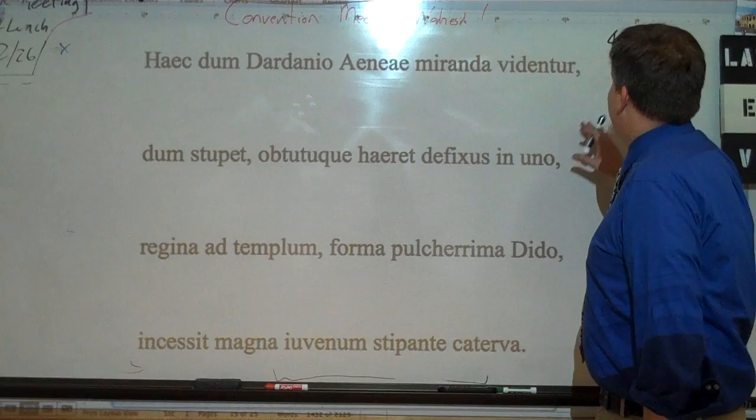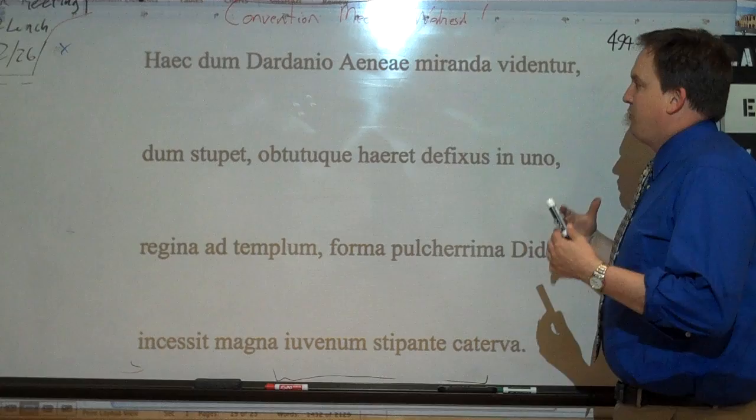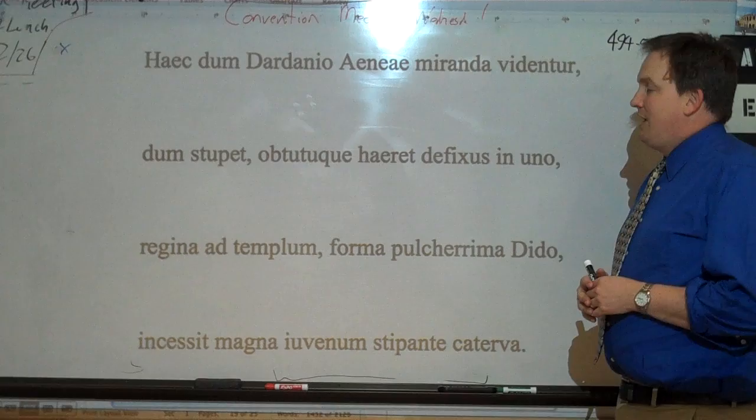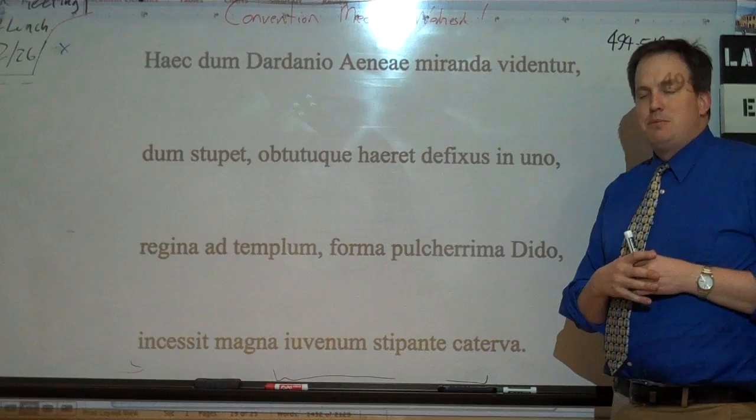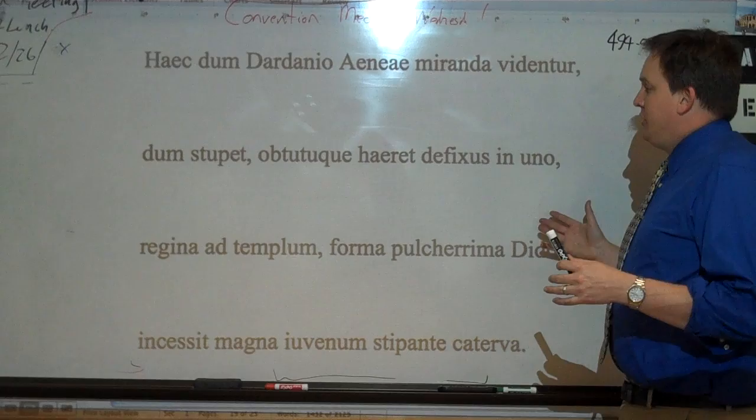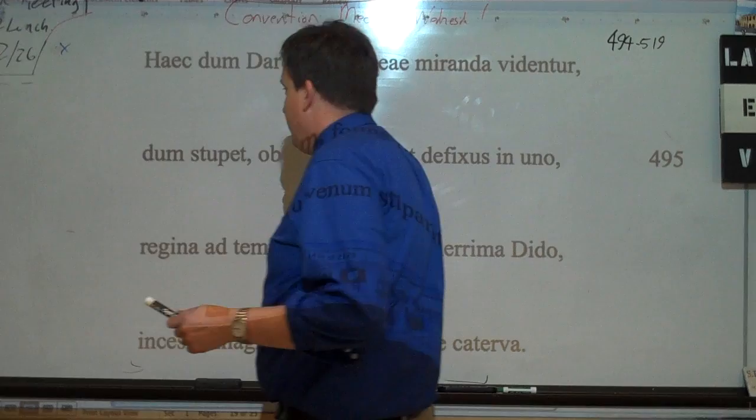So let's take Omnes. Today we're looking at Book 1, line 494 to 519. Alright, so this starts off with Aeneas in the Temple of Juno, in the city of Carthage, with Achates. And they've been looking at the images of the Trojan War upon the Temple, and they've been realizing that they might be at the end of their troubles for at least this part of the tale. And now they're going to meet Dido.